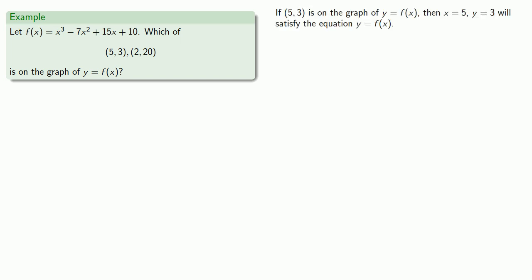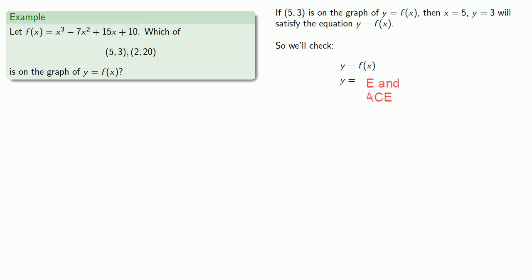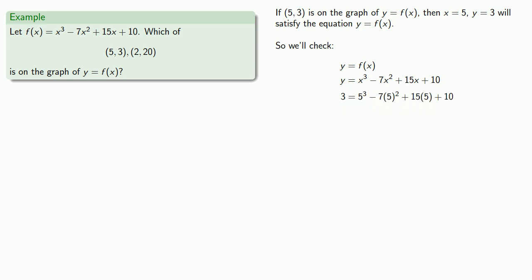If the point (5, 3) is on the graph of y equals f of x, then x equals 5 and y equals 3 will satisfy the equation y equals f of x. So we'll check. We know we're dealing with y equals f of x, and equals means replaceable. So instead of f of x I can replace it with x cubed minus 7x squared plus 15x plus 10. I claim x equals 5 and y equals 3, so we can replace x with 5 and y with 3. Now we should be careful — we don't actually know that the point (5, 3) is on the graph, so we don't really know whether 3 is equal to this expression. We'll put a question mark there and do some calculations.